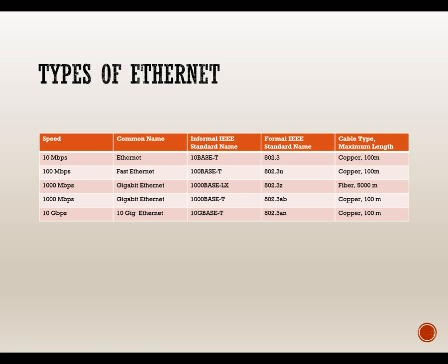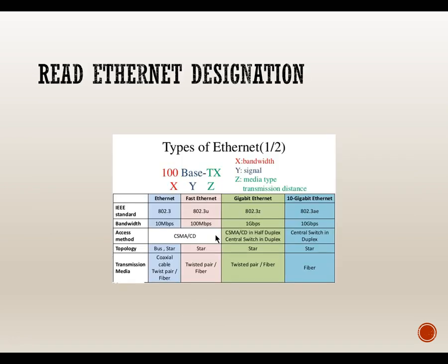Looking at fiber in the gigabit range — 1000 megabits per second Gigabit Ethernet, 1000BaseLX — it looks a little different. We have 10Base, 100Base, 1000Base, and 10GigaBase-T, where T means twisted pair. The LX tells us it's fiber. The fiber standard is substantially longer than 100 meters — five thousand meters, or about three miles.